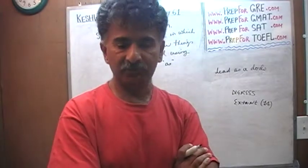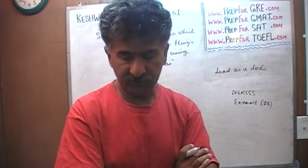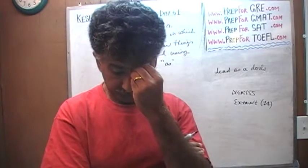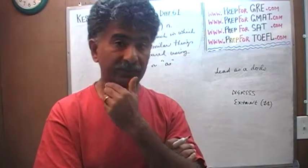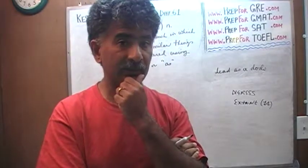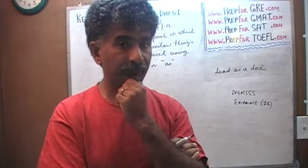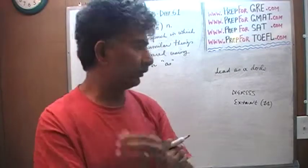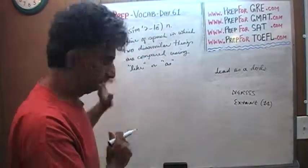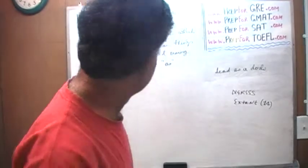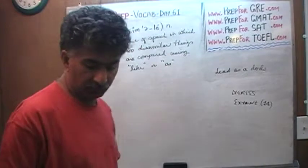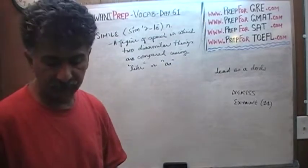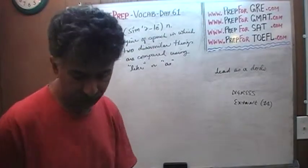So the dodo is an extinct bird, hence the expression 'dead as a dodo.' When they find out what he did, he is dead as a dodo. It is a simile — comparing two dissimilar objects using the word 'like' or 'as'.